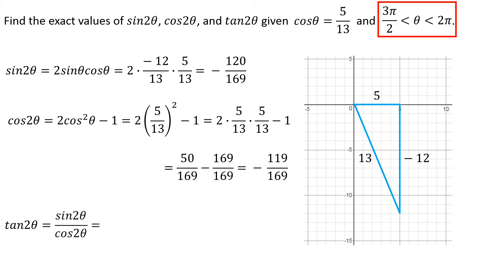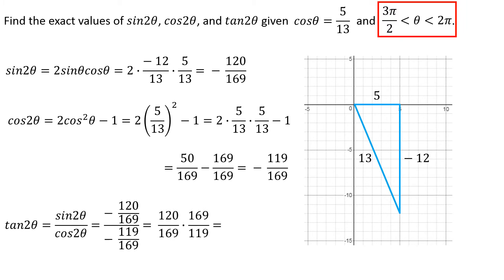For tangent of 2θ, instead of using the double angle formula directly, I can use the fact that tangent equals sine over cosine. I already know sine of 2θ = −120/169 and cosine of 2θ = −119/169. Negative divided by negative — dividing fractions gives 120/119. In quadrant 3, sine is negative, cosine is negative, and tangent is positive, which checks out.